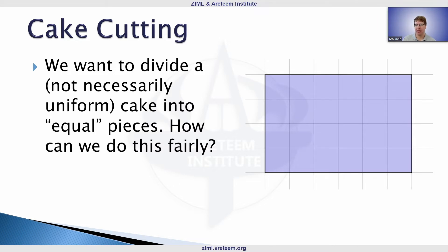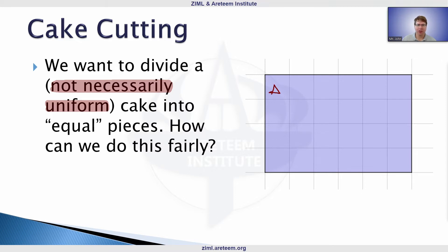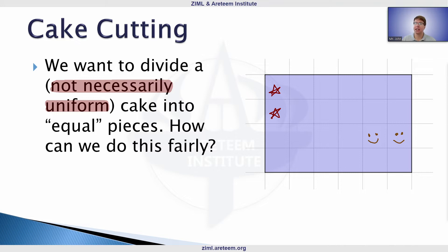The goal is to divide a not necessarily uniform cake into equal pieces in some fair method. It's important to stress that the cake is not necessarily uniform. When drawn it seems obvious — just cut it in two — but what if there's extra frosting on one side, or it's a photo cake with your favorite animal on one side? People might want certain parts, different flavors, more or less frosting.